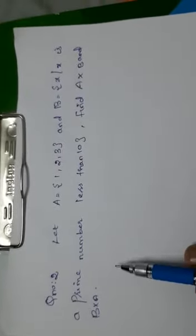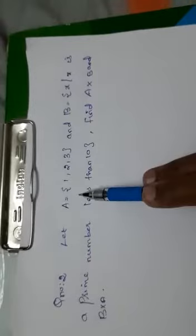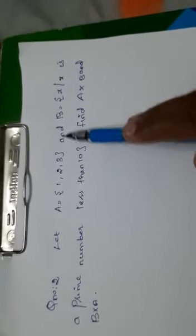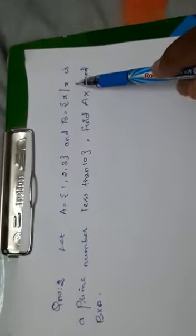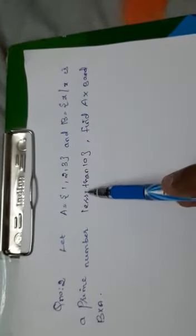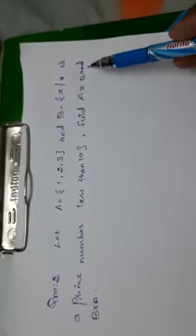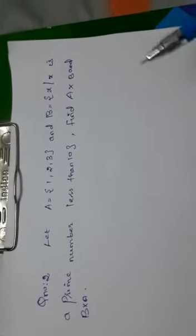Now, question number 2. Let A equal to 1, 2, 3 and B equal to X such that X is a prime number less than 10. Find A cross B and B cross A.